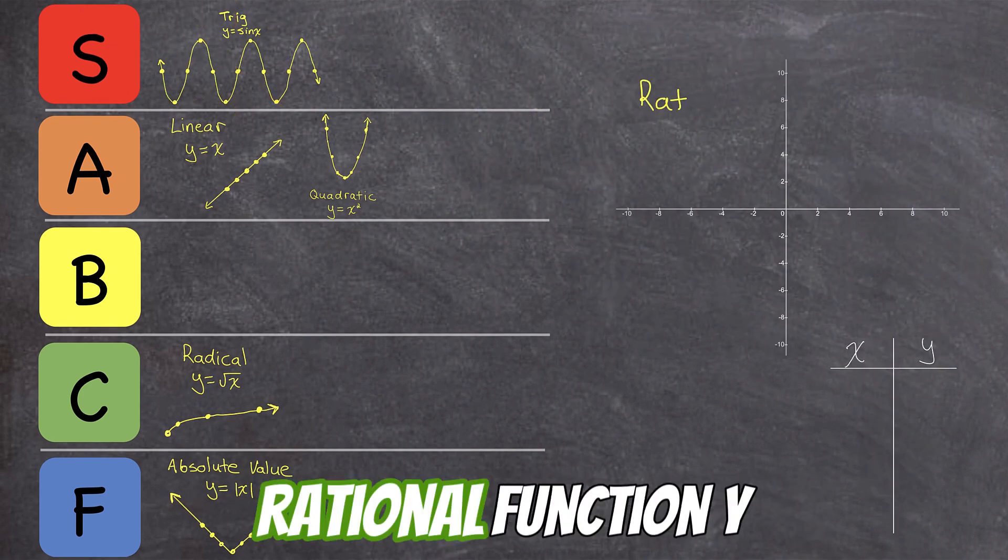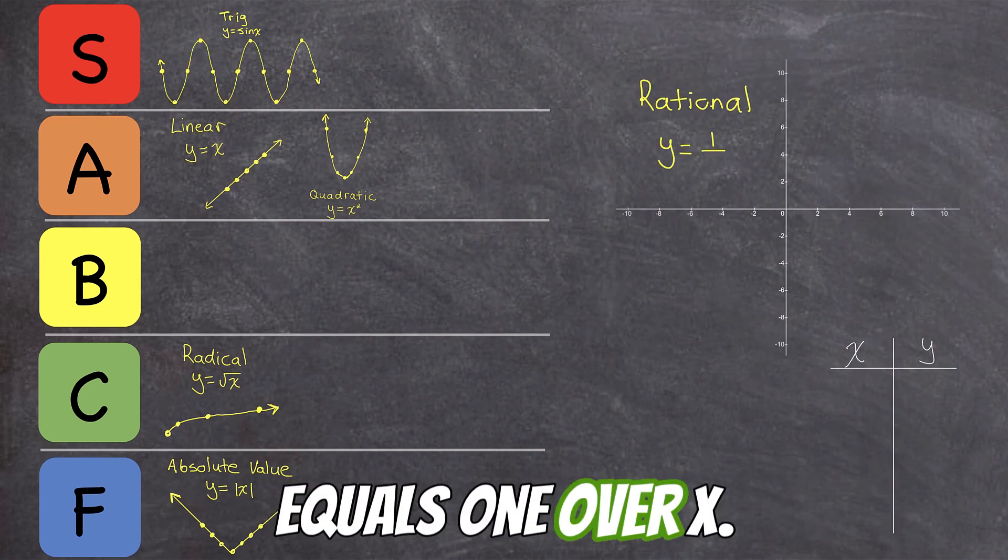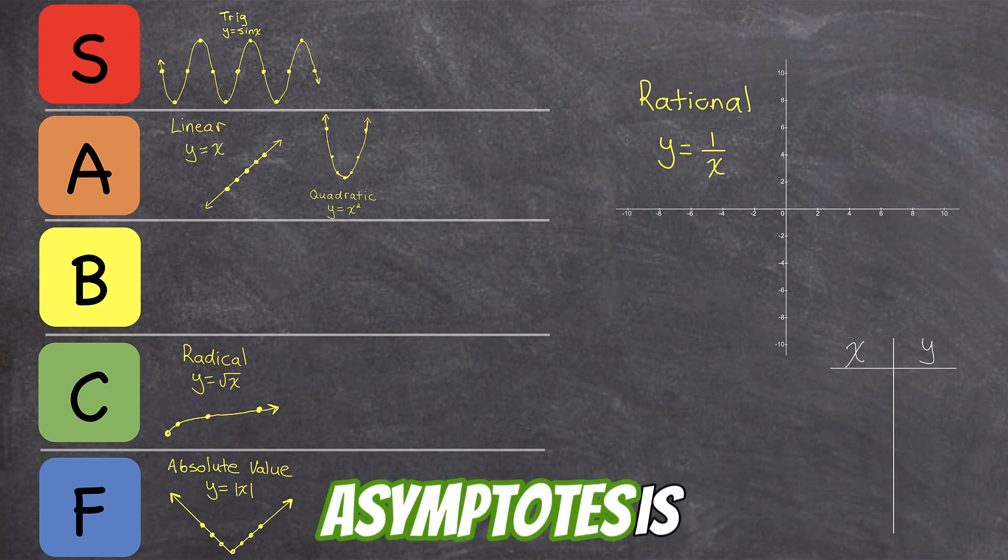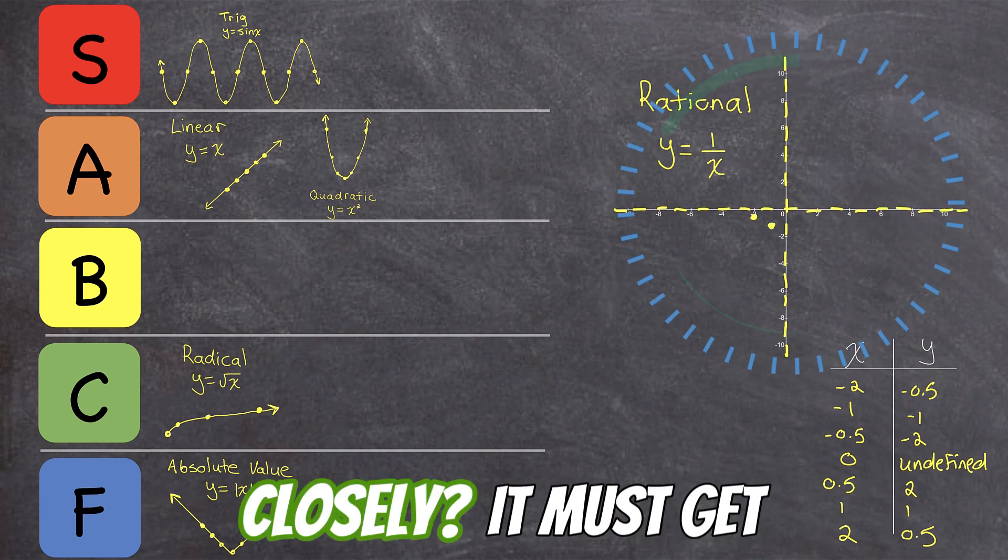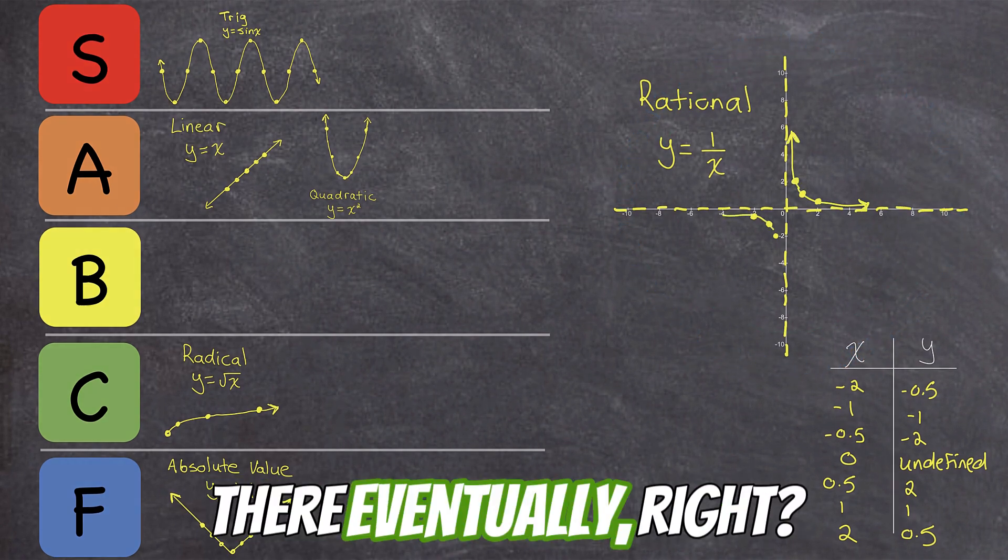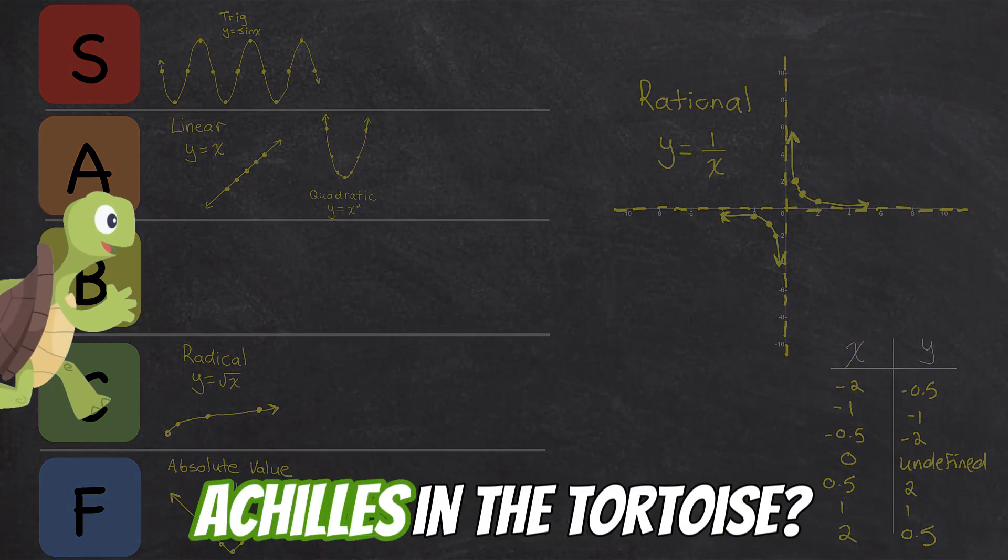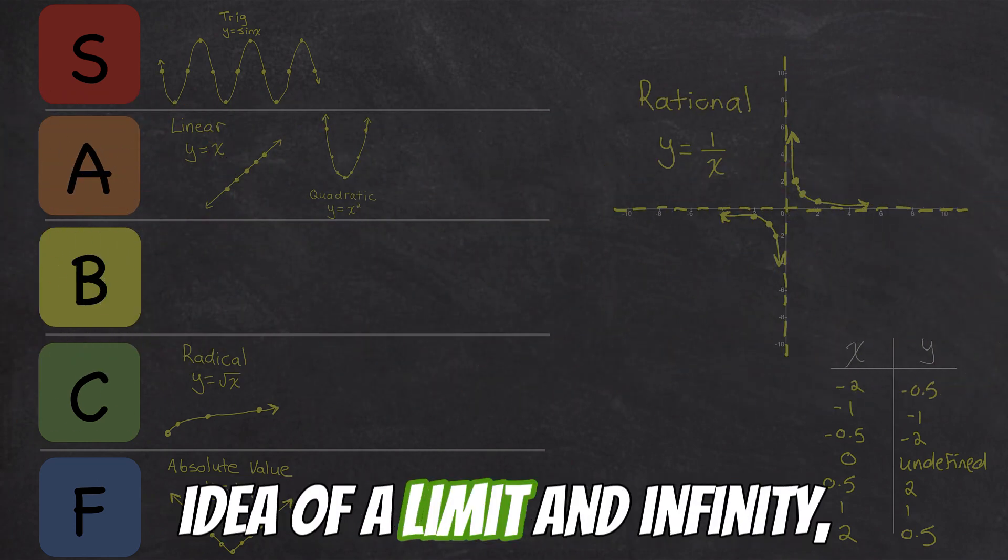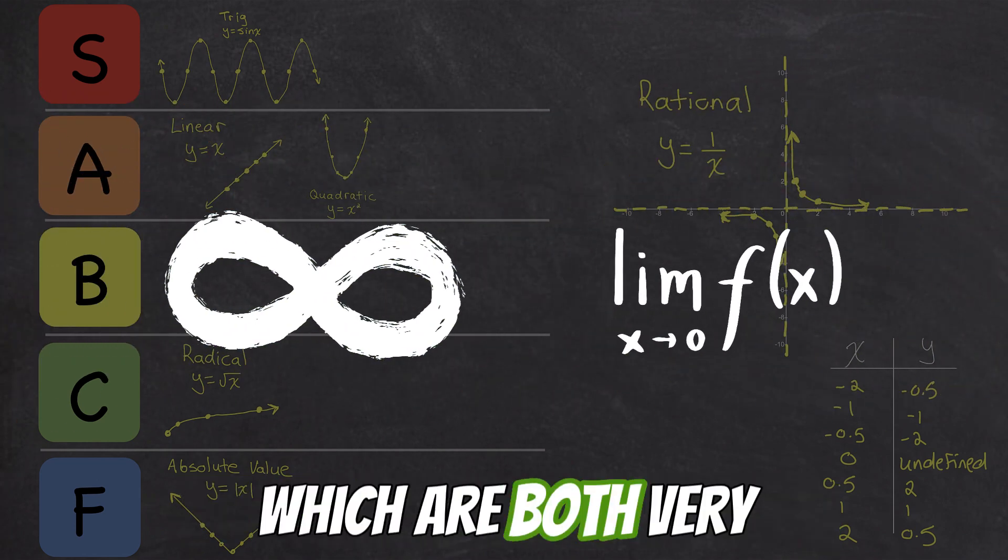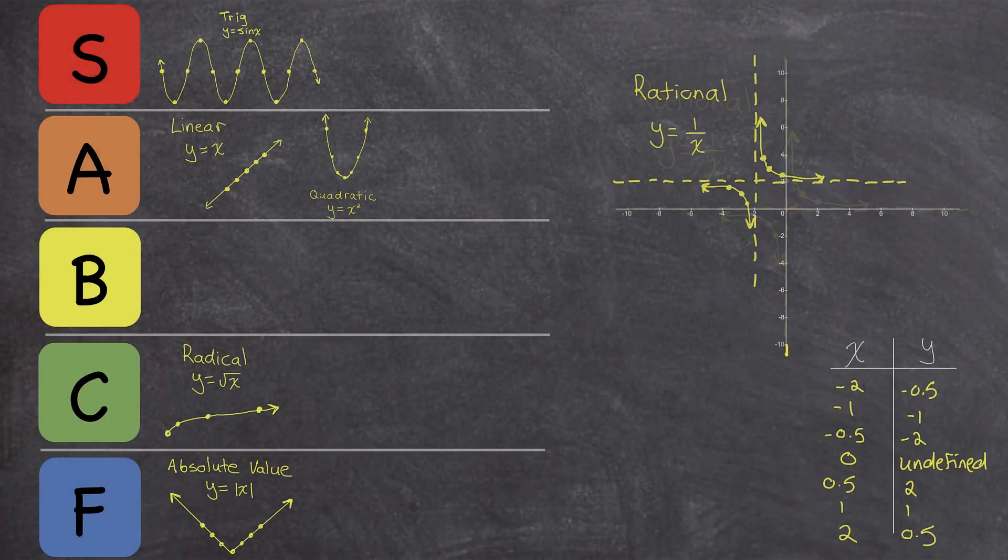Next up, we have the rational function, y equals 1 over x. Any function with asymptotes is interesting. Are we sure it just approaches those lines more and more closely? It must get there eventually, right? Haven't you heard of Achilles and the tortoise? This function makes you actually think about the idea of a limit and infinity, which are both very important ideas in math. B-tier.